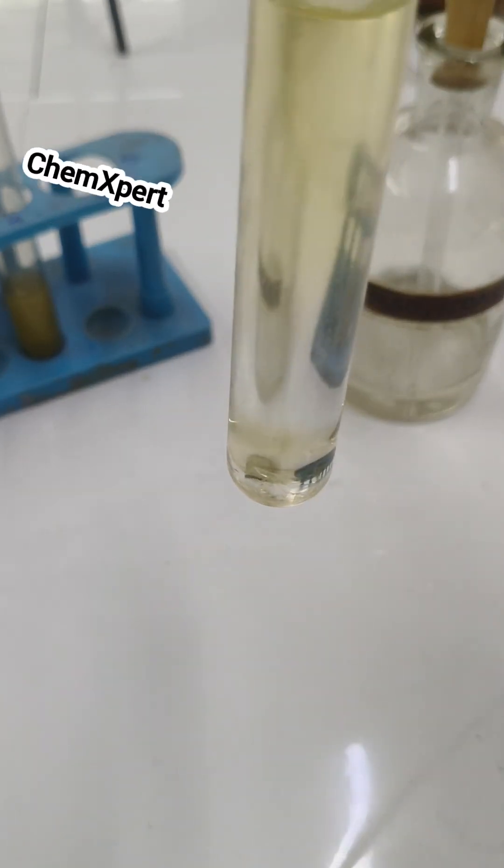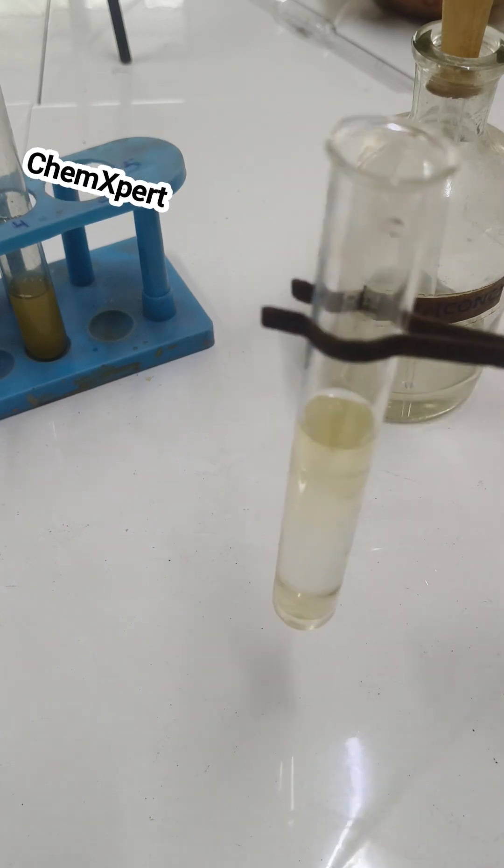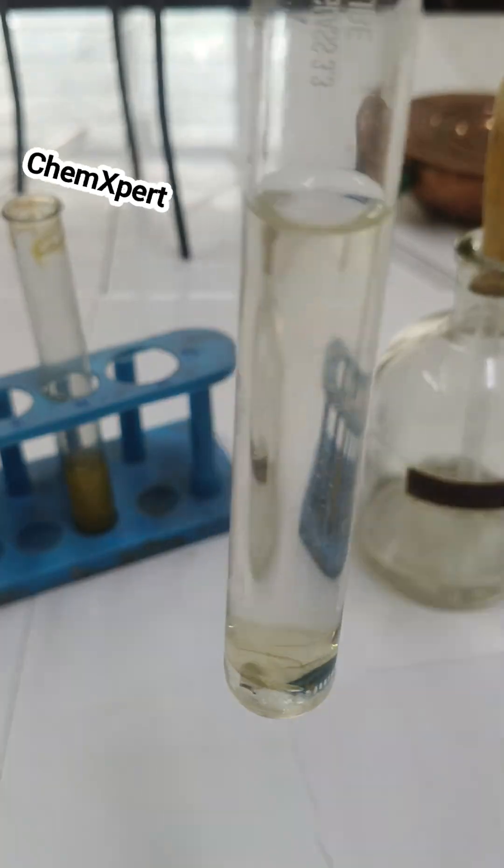You can observe with time a black color ring appears at the junction of two liquids. Within a few seconds you can observe a complete circle is formed.